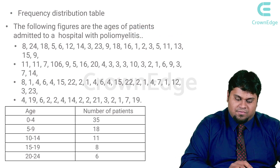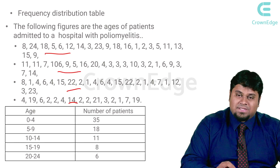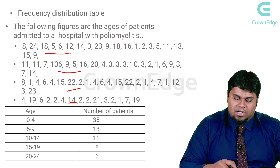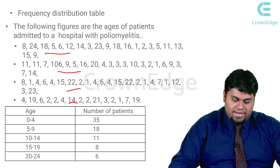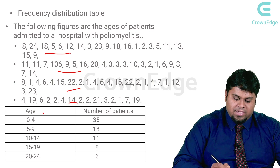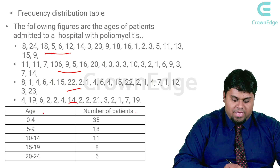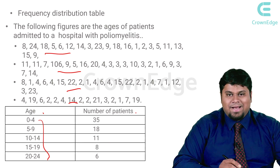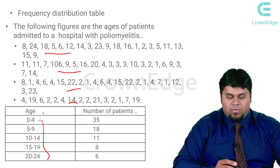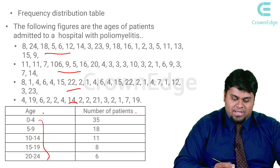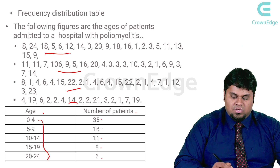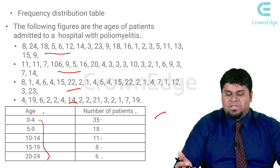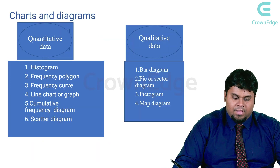In a frequency distribution example, the ages of patients admitted with polio are categorized into groups: 0–4, 5–9, 10–14, 15–19, and 20–24 years, with corresponding patient counts of 35, 18, 11, 8, and 6 respectively. This converts a confusing raw dataset into a clear, organized frequency table.